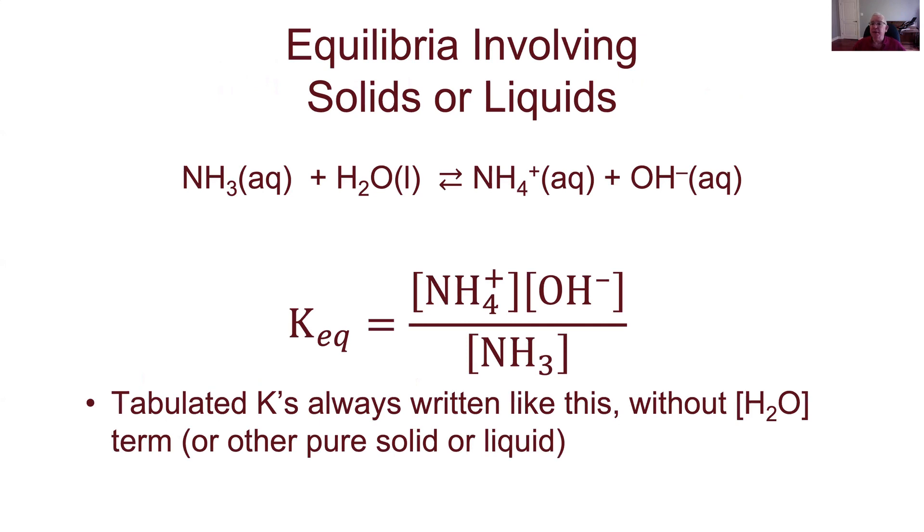As a result, if we look and write the equilibrium constant for that reaction, it is universally written in the form that is here, where it just does not include the water term. This particular equilibrium constant also sometimes is given a special designation. It's called KB, where B just stands for base. So that's the ionization dissociation constant for a weak base. If you see that KB, that's what that means. You'll also see Ka occasionally, which is the same expression but for a weak acid. So if you look up the equilibrium constant for any of these weak acid, weak base dissociations, they're going to be tabulated assuming that you're not putting the water piece in there.